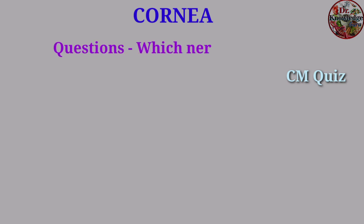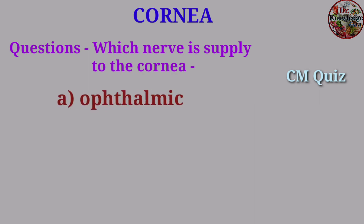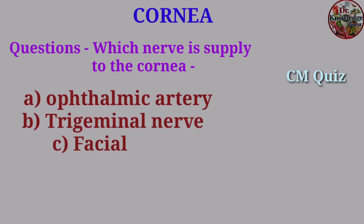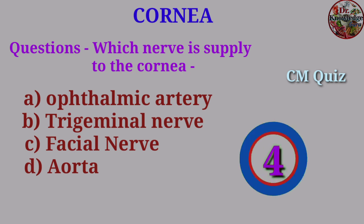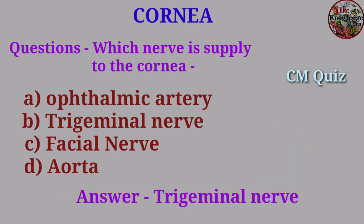Question: Which nerve supplies the cornea? A. Ophthalmic artery, B. Trigeminal nerve, C. Facial nerve, D. Aorta. Answer: Trigeminal nerve.